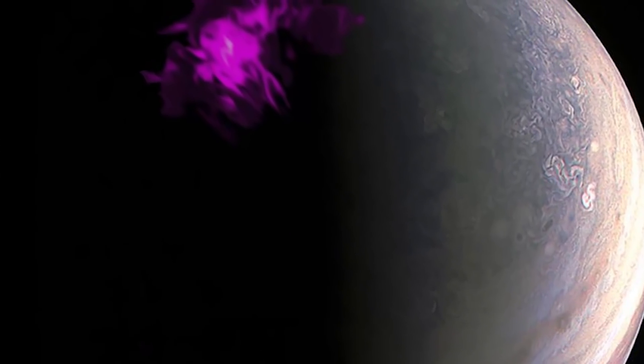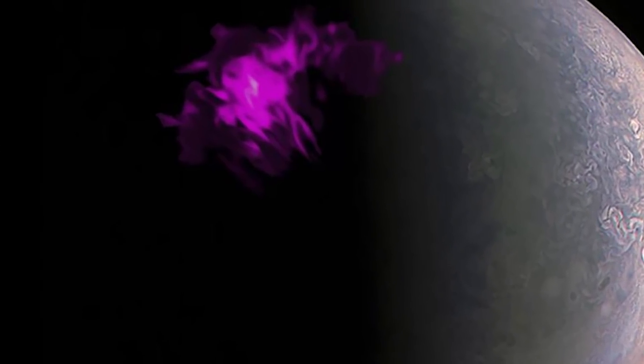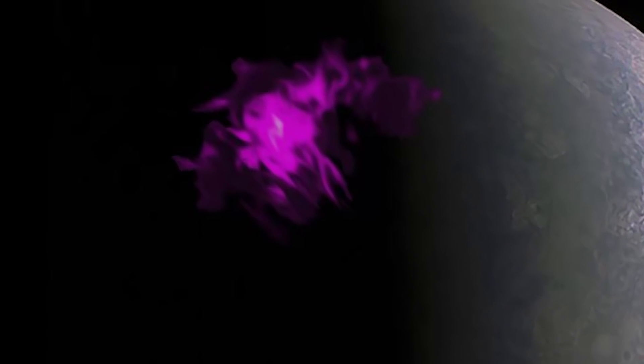Stunning images captured by NASA's Juno spacecraft show bright purple glowing lights at the north and south poles of Jupiter. And in case you're wondering, no, the glowing lights are not from alien cities.